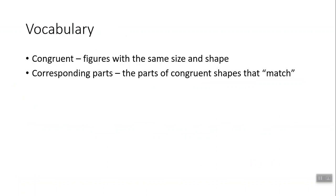There are two definitions to start. The first definition is the word congruent, which means that the figures have the same size and the same shape. The second concept is corresponding parts — these are the parts of congruent shapes, and in this lesson particularly triangles, the parts of congruent triangles that match.